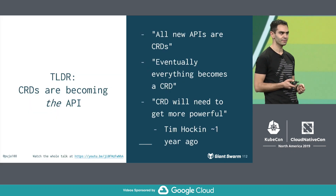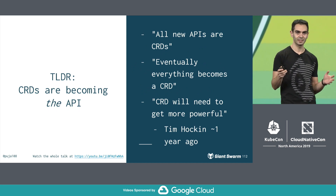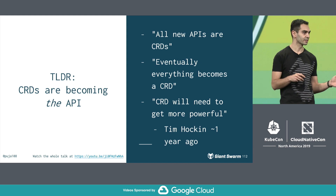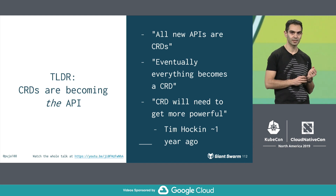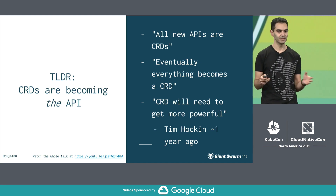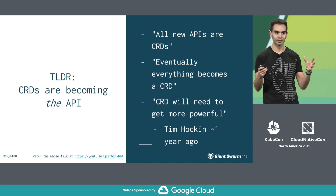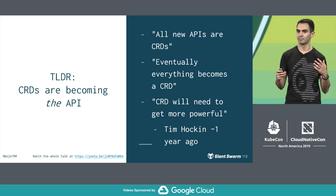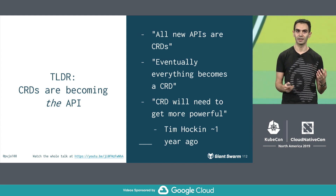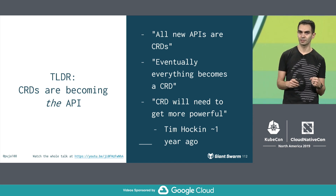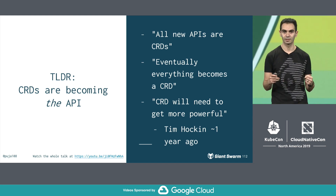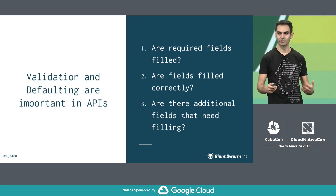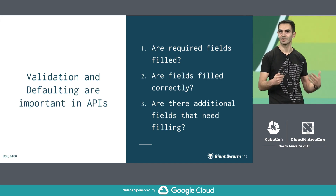Roughly a year ago, Tim Hawken was mentioning that CRDs are becoming the API. And if you were at the Contributor Summit, there were also some talks about that. Once we build the API with CRDs, we need to talk much more about the user experience of this API. One of the key things we need to do is get validation and defaulting in to help users have fewer issues.